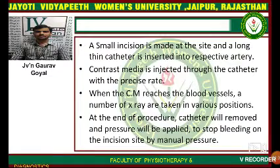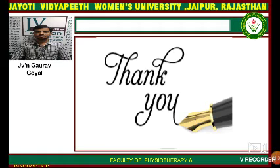A small incision is made at the site and a long thin catheter is inserted into the respective artery. Contrast media is injected through the catheter at a precise rate. When the contrast media reaches the blood vessels, a number of X-rays are taken in various positions. At the end of the procedure, the catheter is removed and pressure is applied to stop bleeding at the incision site by manual pressure.